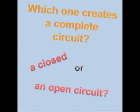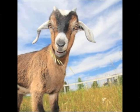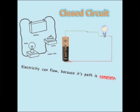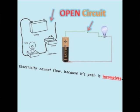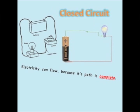Number three: which one creates a complete circuit — a closed or open circuit? A closed circuit is complete, whereas an open circuit is incomplete. Think of leaving that refrigerator door open — it lets out all the cold air and energy. If you close that door, the energy is flowing right where you want it, in an enclosed area.